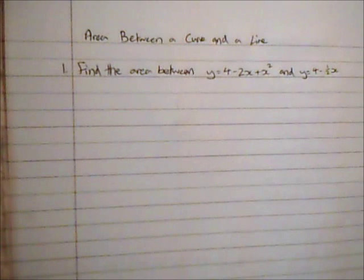In this video we're going to look at how to find the area between a curve and a line. So we're going to look at this curve y equals 4 minus 2x plus x squared and the line y equals 4 minus half x.